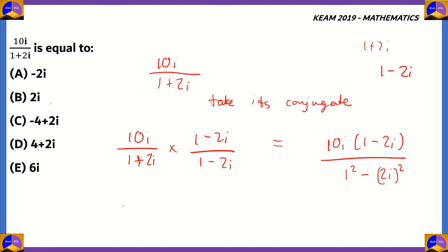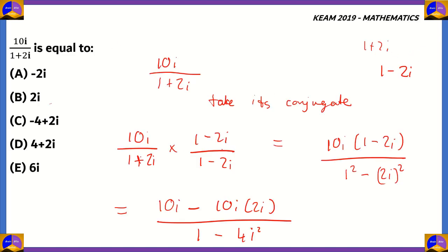Now we will get, when we check out the numerator, you'll get 10i minus 10i times 2i and in the denominator, it'll be 1 squared minus 2i squared, which is 4 times i squared. Now, we know that i is under root of minus 1. So, i squared will be minus 1. We should put in that value.